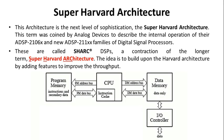The next level of sophistication is the super Harvard architecture. This term was coined by Analog Devices to describe the internal operation of their ADSP and new ADSP families of digital signal processors. These are called SHARC DSPs, a contraction of the longer term super Harvard architecture. The idea is to build upon the Harvard architecture by adding features to improve the throughput.